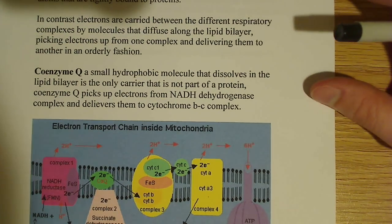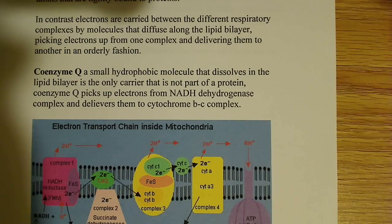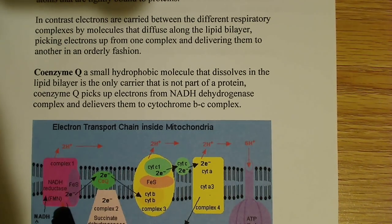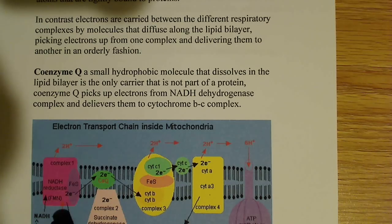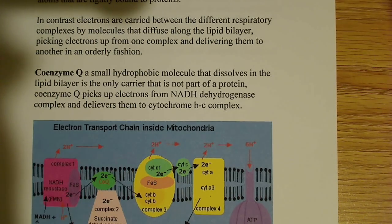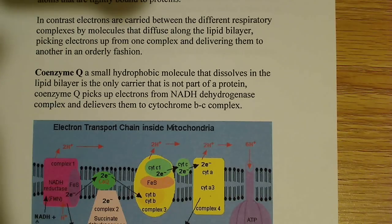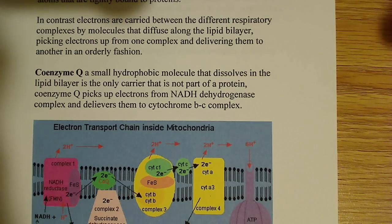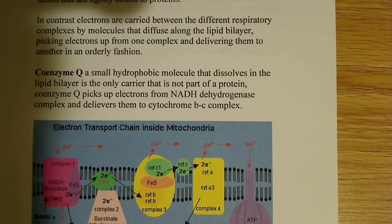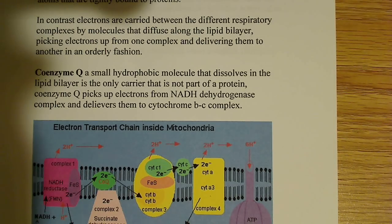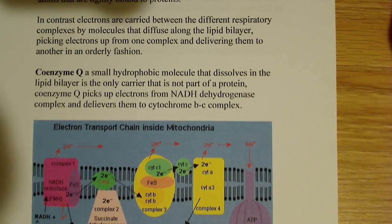Coenzyme Q is a small hydrophobic molecule that dissolves in the lipid bilayer. It's actually located in the lipid bilayer, and you can see coenzyme Q transporting the electrons from the NADH dehydrogenase complex, also known as complex 1. It diffuses through the lipid bilayer, and it's the only carrier that is not part of a protein. Coenzyme Q picks up electrons from NADH dehydrogenase complex and delivers them to cytochrome BC complex.